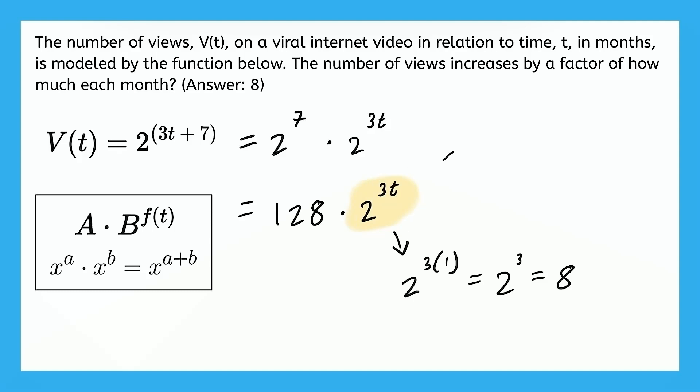Now what happens if t is 1, that is 1 month? Well, this entire part of the expression, 2 to the power of 3t, becomes 8. So let's put 8 in that place right there. Okay, so when t is 1, that is 1 month, B to the power of f(t) is 8. So every month, the number of views increases by a factor of 8. So there it is, the answer is a factor of 8.